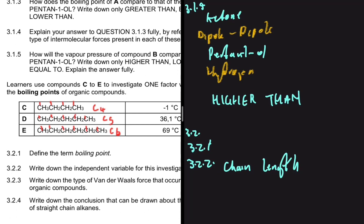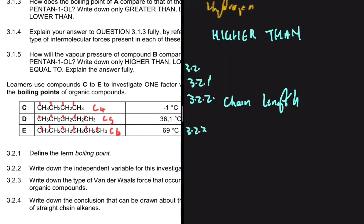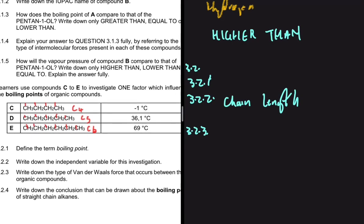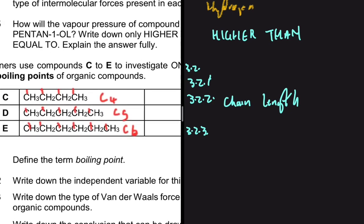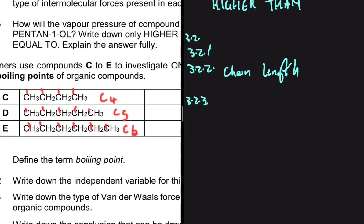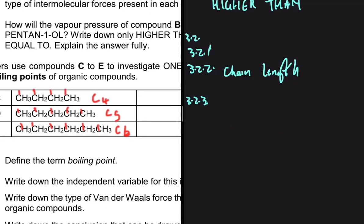For 3.2.3, write down the type of van der Waals force that occurs between these organic compounds. These compounds are all alkanes. Compound C has four carbons, compound D and E similarly — they're all alkanes. The force occurring in compounds C, D, and E is London forces, also known as induced dipole forces.